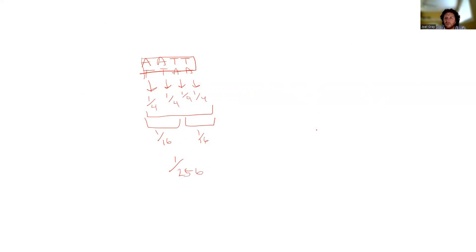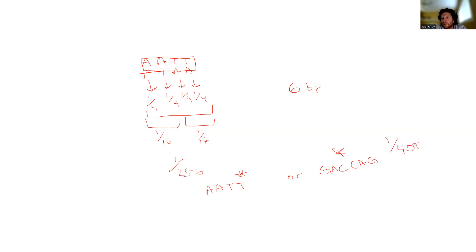The longer the recognition sequence, the less frequently you'll find it. So you'd find a four-base sequence like A-A-T-T more often than a six-base sequence like G-A-C-C-A-G. I hope that was helpful for looking at and considering the difference between the bonds broken by restriction endonucleases directly and those broken indirectly, and for thinking about the terminology — blunt end versus sticky end. I hope that was helpful and I hope you have a good one.